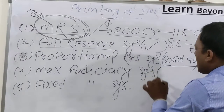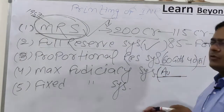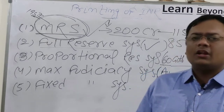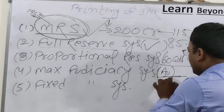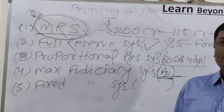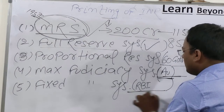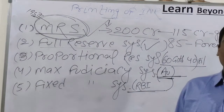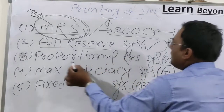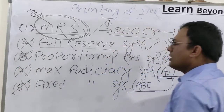Under the Maximum Fiduciary System, an authority — empowered by Government of India — fixes a benchmark, and within that benchmark money can be printed. The Fixed Fiduciary System means RBI, under law, is bound to print currency only when law mandates it. These four systems are less important compared to MRS, but understanding the concept of all systems is valuable.